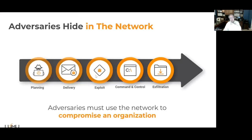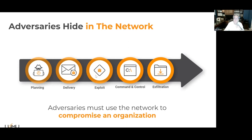Adversaries hide in the network. You've all heard about the cyber kill chain. Of the five steps, four of them require the network. The first one — planning — is stuff you can do to clean up your environment, like recon they've done via LinkedIn and everything else. But delivery, exploit, command and control, and exfiltration all rely on the network. That's why network visibility is critical. At Lumu, we call this our illumination process.